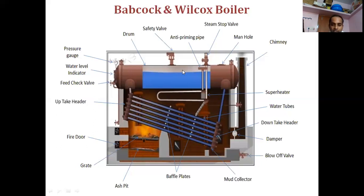The steam collected may sometimes be wet steam. Since we are interested in using dry or superheated steam, the wet steam is taken through a tube and passed into the superheater. The superheater is placed in the chamber where hot gases are continuously coming, so the hot gases transfer heat to the steam in the superheater tube and convert it into dry or superheated steam, which is then taken through the steam stop valve for turbine blade operation.